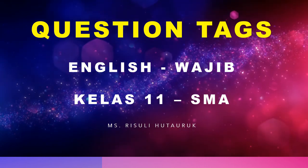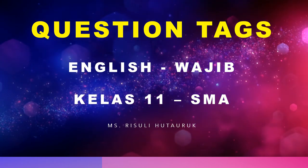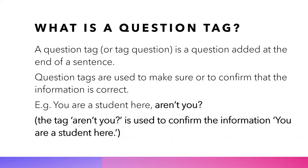Welcome to our class again. This time we're going to talk about question tags. What is a question tag? A question tag, or a tag question, is a question added at the end of a sentence. Question tags are used to make sure or to confirm that the information is correct. For example, 'You are a student here, aren't you?' The tag 'aren't you' is used to confirm the information 'you are a student here.'